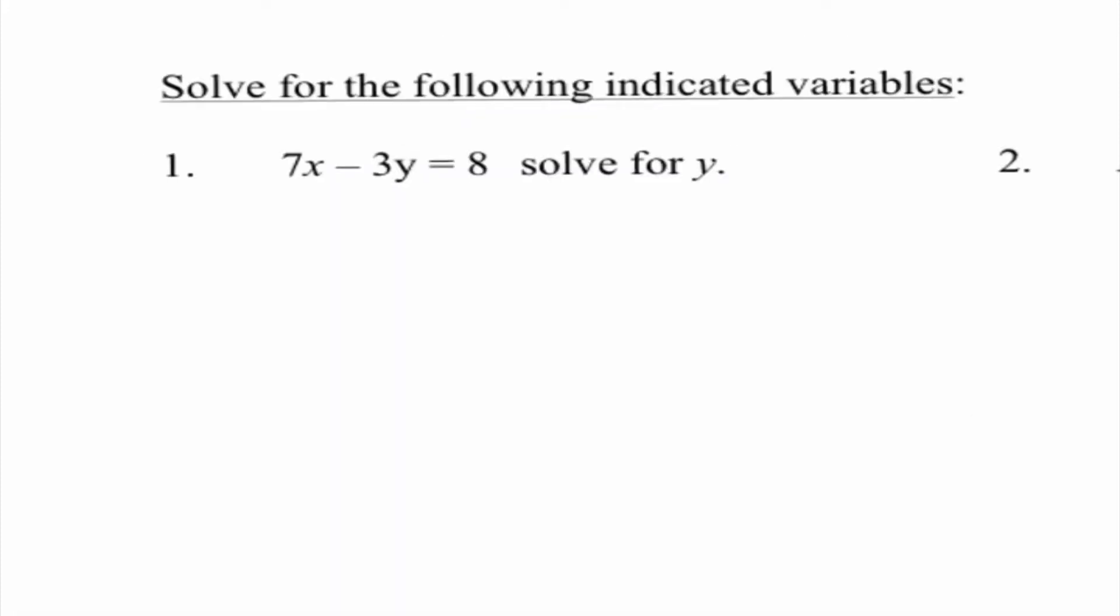Looking at number 1, we have 7x minus 3y equals 8 and it's telling us to solve for y. So this is the type of problem you guys are used to doing. So we need to get y all by itself. So I would start by getting rid of this 7x by subtracting it from both sides. And when we subtract it from both sides, it doesn't matter if we write 8 minus 7x or negative 7x plus 8. Either way would be completely fine.